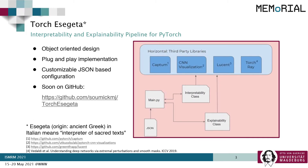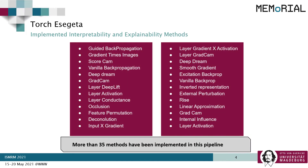There are many libraries out there dealing in interpretability and explainability. We have created a pipeline for PyTorch combining some of these libraries, named Torch Ezegeta, which in Italian means interpreter of sacred texts. This pipeline provides a plug-and-play interface to run interpretability and explainability methods on given models. This will soon be available on my GitHub. More than 35 interpretability and explainability methods have already been implemented in this pipeline, and further methods will be implemented in the near future.